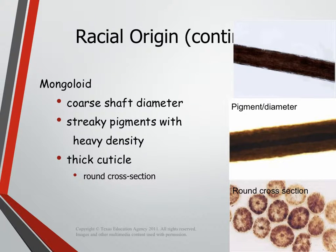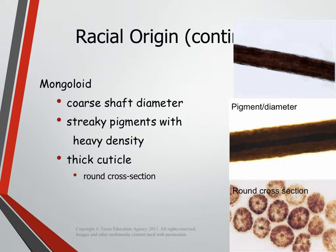The last group is mongoloid. They have very thick hairs — each individual hair is very thick in diameter, which is what a coarse shaft diameter means. They have streaky pigments with heavy density, so you can see how the pigment is laid down almost in lines, and there are some sections where there's almost no pigment whatsoever — it almost looks transparent. They have a thick cuticle, and most importantly they have a round cross section. When you cut their hair in half and look at it, it's truly round. Please sketch this diagram next to your notes.